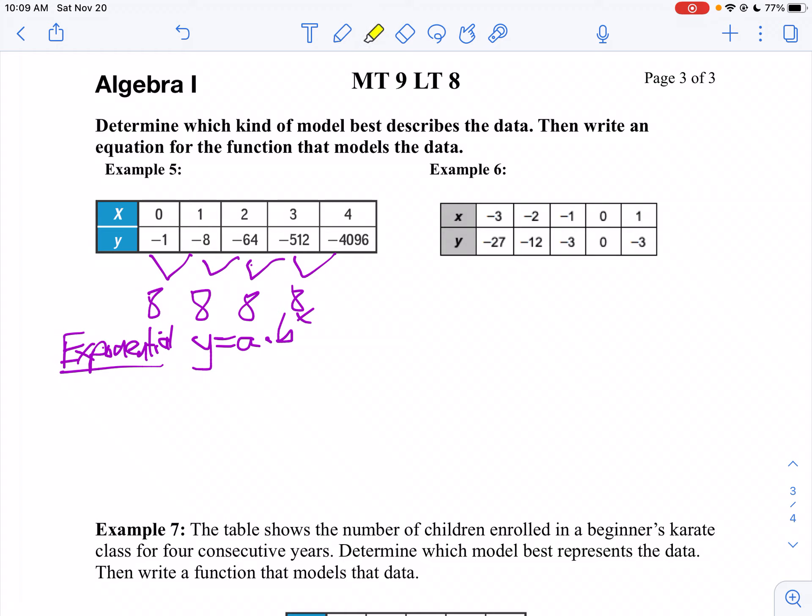So let's use 1 and negative 8. I'm going to say negative 8 equals a times 8 to the first power, or negative 8 equals 8a. So a is negative 1. So we're going to say y equals negative 1 times 8 to the x power, or y equals negative 8^x.